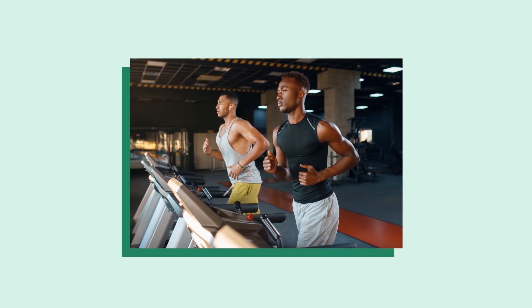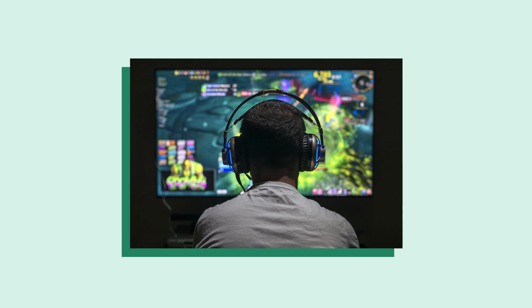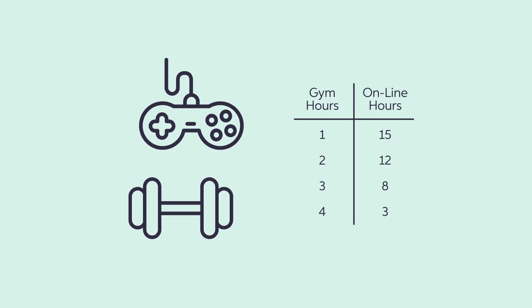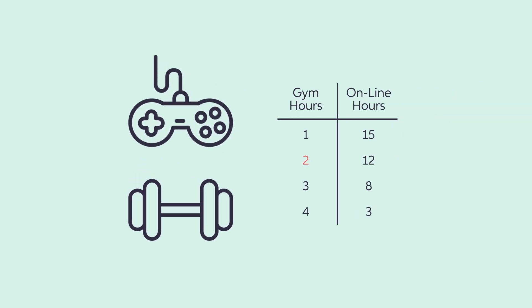However, spending time at the gym isn't Weston's only source of happiness — he also likes to spend time gaming online with friends. How can we model these preferences between these two goods? Each week Weston can trade off between hours spent at the gym and hours spent online. However, when total gym hours are low and online hours are high, the marginal utility lost from one less hour at the gym is greater than the marginal utility gained from one more hour online. To retain the same utility level, one less hour spent at the gym must be replaced by more than one hour online.